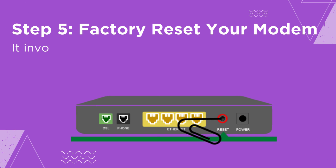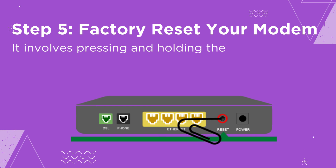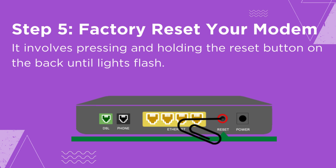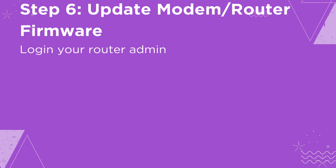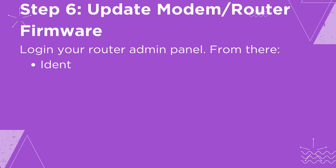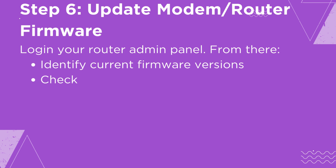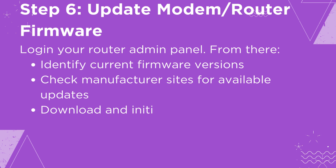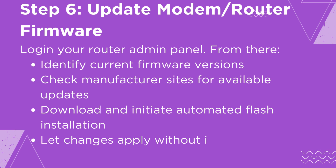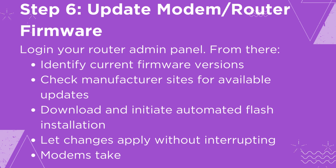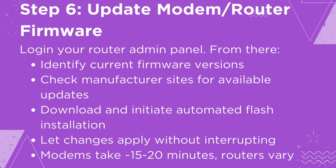Step 5: Factory Reset Your Modem. Press and hold the reset button on the back until the lights flash — this returns settings to factory default. Step 6: Update Modem and Router Firmware. Log into your router admin panel, identify the current firmware version, and check the manufacturer's site for available updates. Download and initiate the automated flash installation, and let the changes apply without interrupting. Modems take 15–20 minutes; routers vary.